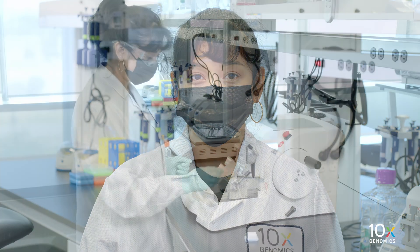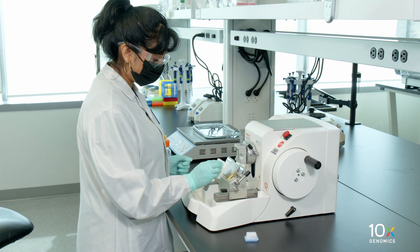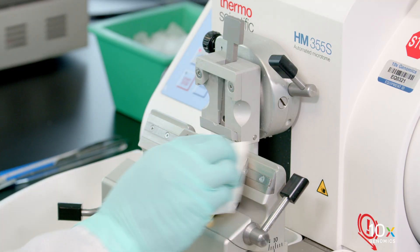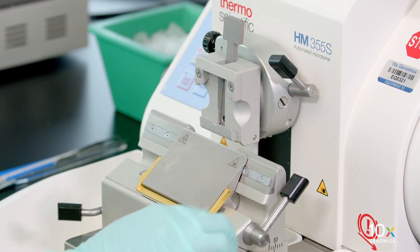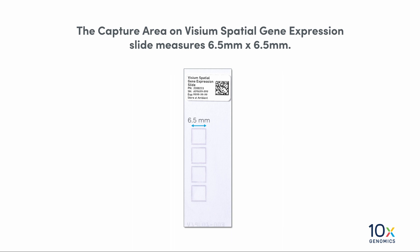We are preparing to score the FFPE tissue block. Before starting, wipe down all the surfaces and work areas with RNaseZap RNase decontaminating solution. The capture area on the Visium Spatial Gene Expression slide measures 6.5 millimeters by 6.5 millimeters.